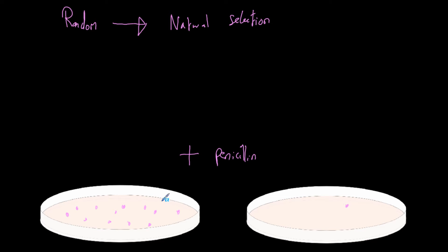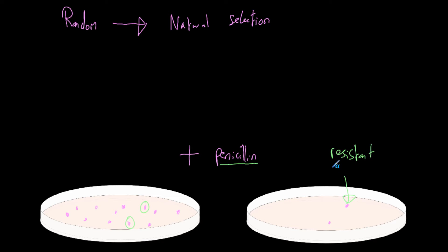What if this colony here and this one here are visible but there are no other colonies? These two have grown on the new plate and the rest haven't. The rest of them have been killed by the penicillin, because that's what penicillin does — it's an antibiotic and it will kill bacteria. So why have these two survived? That is because they have mutated and formed resistance to penicillin. So these colonies have mutated and are now resistant to penicillin.